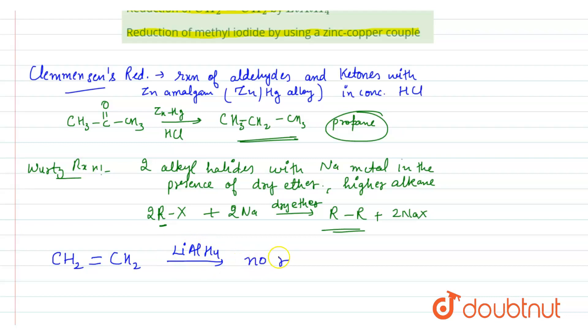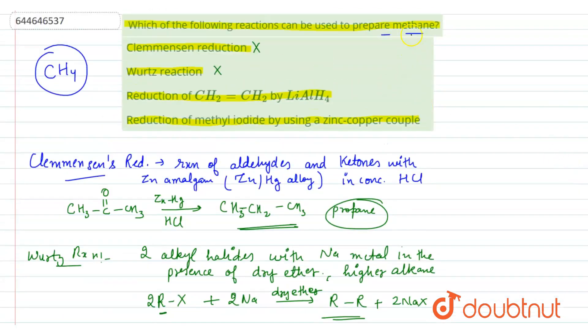There will be no reaction here as this is an alkene and it is non-polar. As we know, LiAlH4 only reduces polar compounds and does not reduce non-polar compounds like carbon-carbon double bond or triple bond. It won't reduce alkenes into any kind of product, so obviously there will be no preparation of methane in this case also. The last is reduction of methyl iodide by using zinc-copper couple.